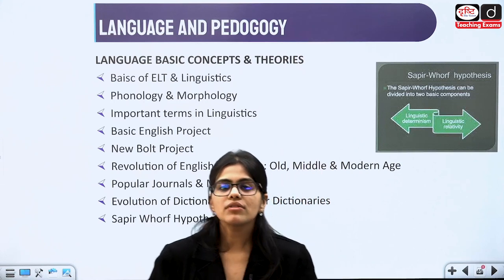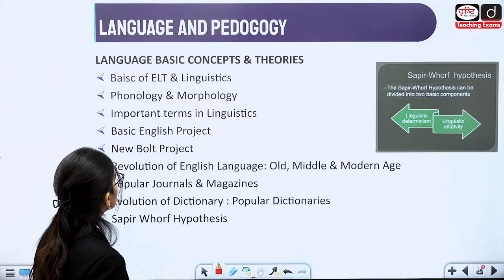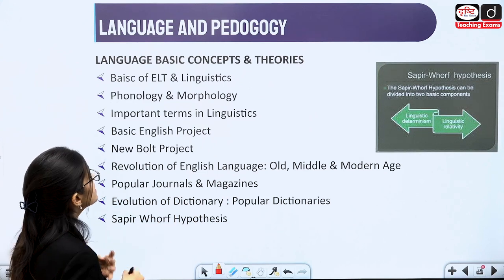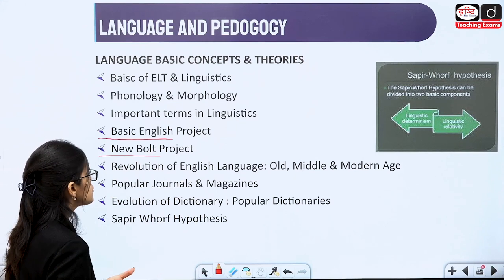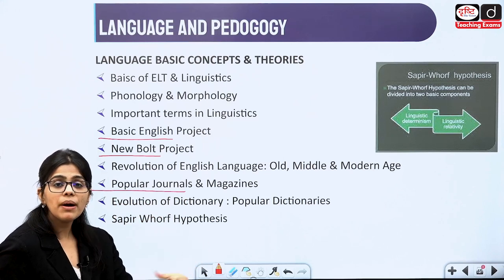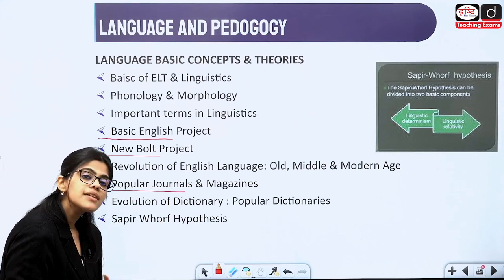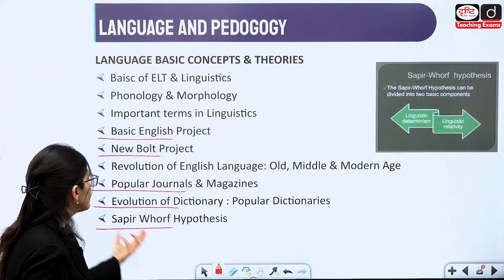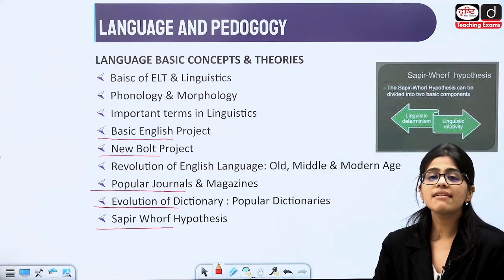Then comes the Language and Pedagogy section, which can be dealt with in one or two classes. We will study all basic linguistic features — terms like phonology, morphology, and other important concepts under ELT. We will study the Basic English project, the Newbolt Report, the evolution of the English language, popular journals and magazines — building a complete list by the end — as well as the evolution of the dictionary, popular dictionaries, and the Sapir-Whorf hypothesis, from which questions are also asked.